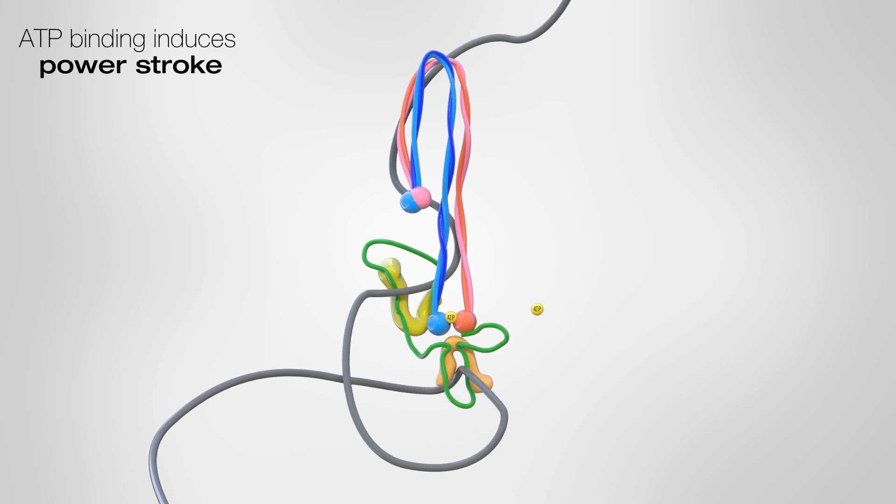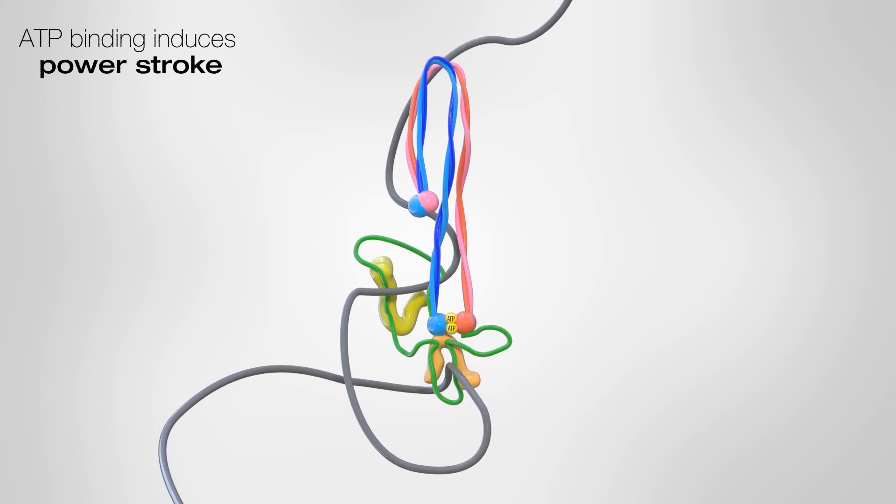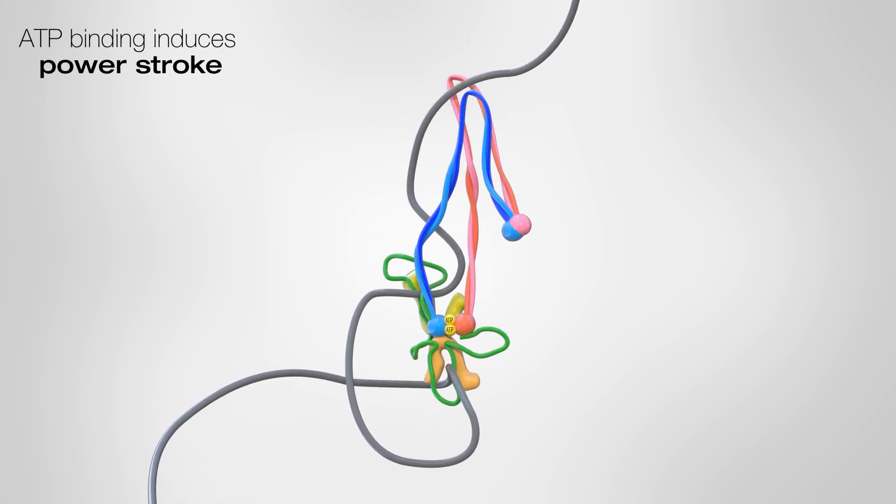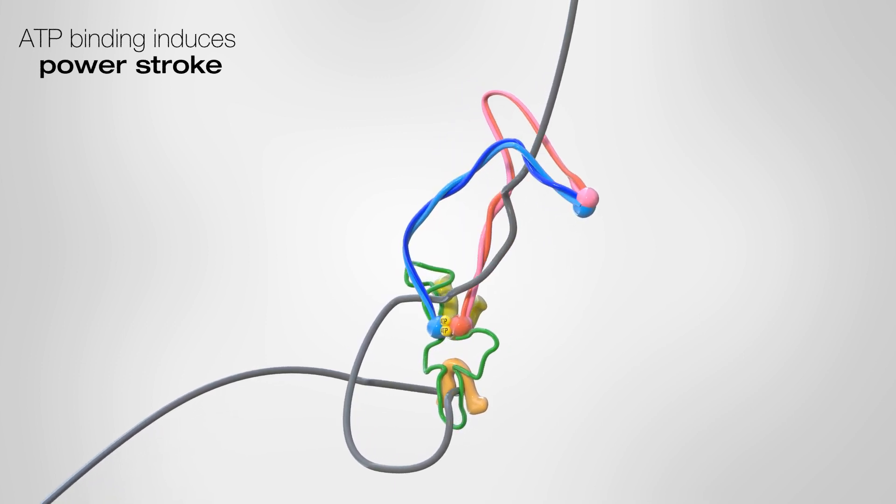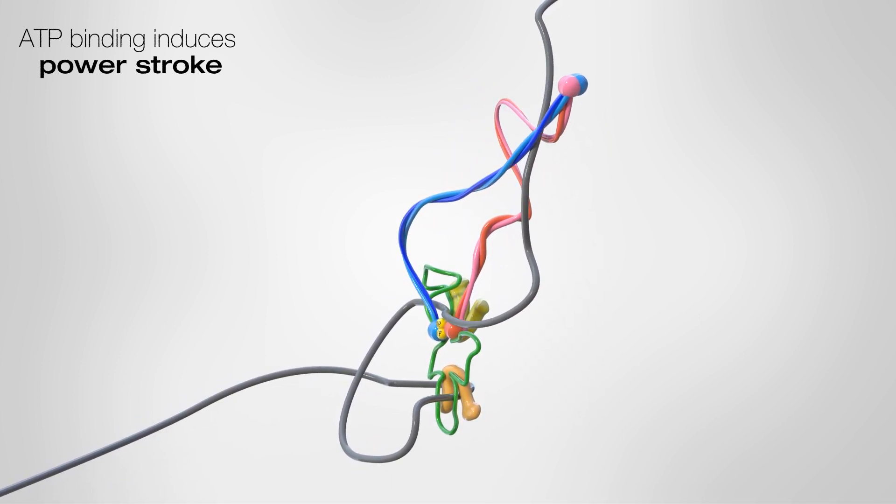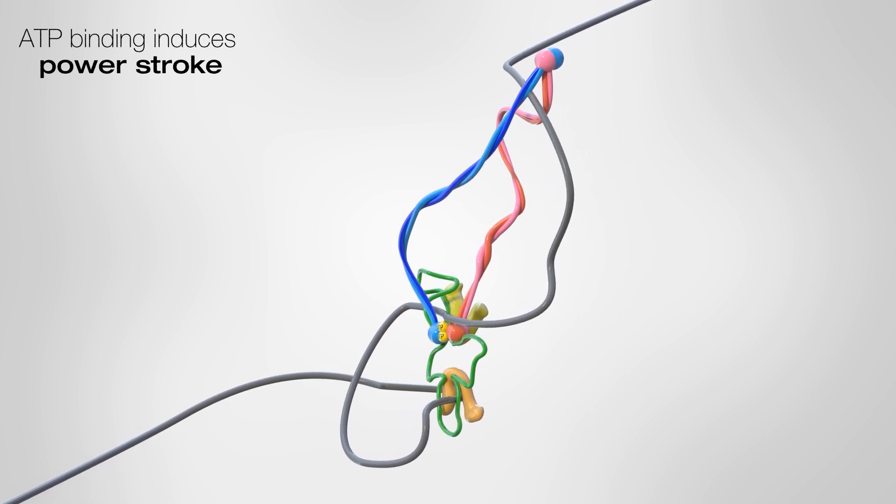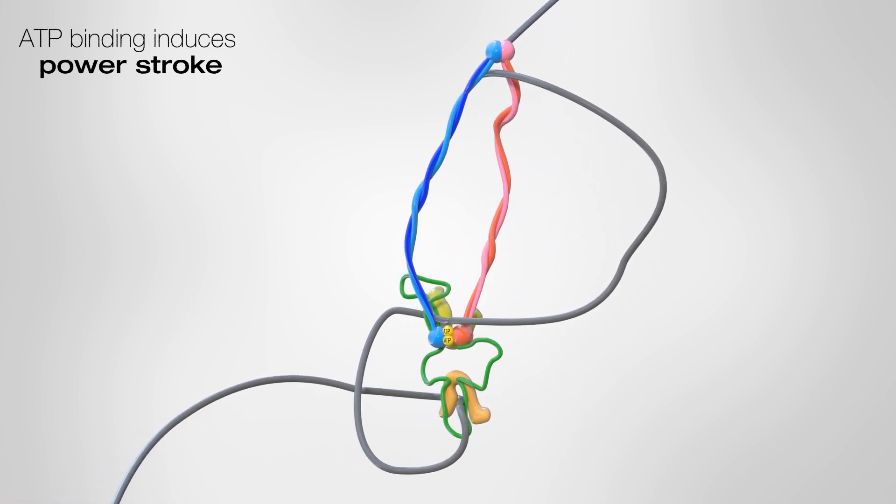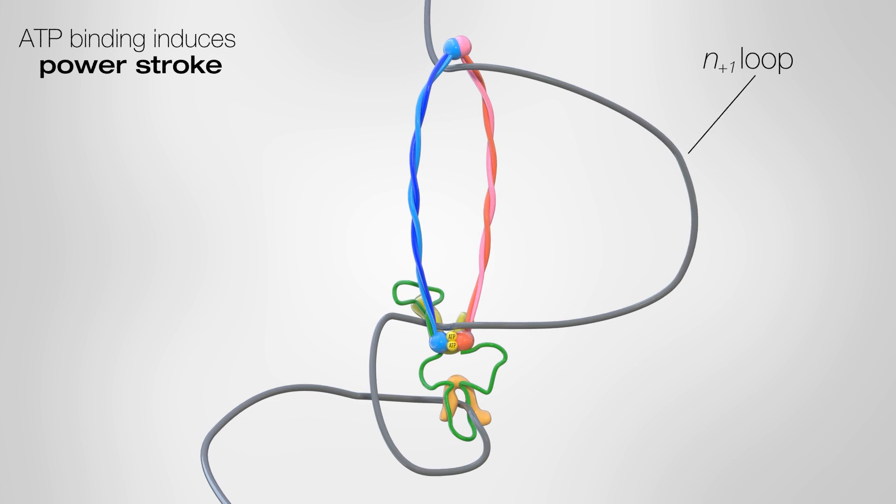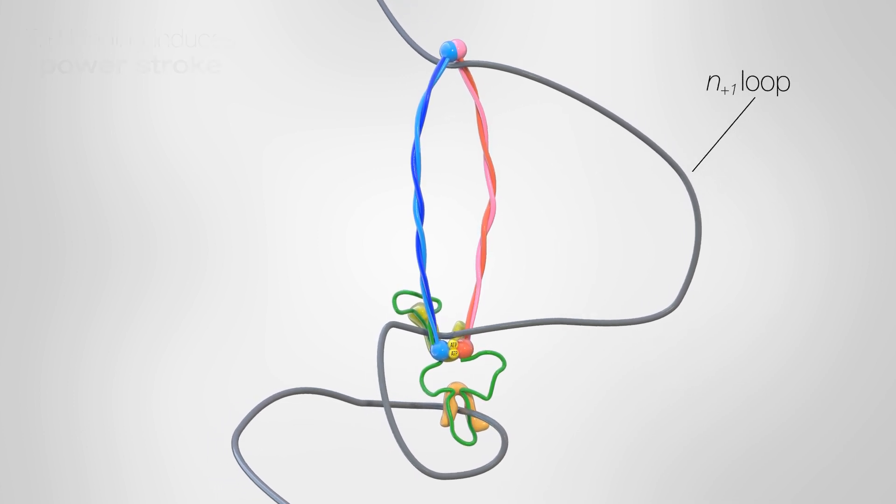Once ATP binds, our cryoEM structure shows that close to the motor chamber, the catalytic domains dimerize and open up the previously sealed long extensions of the machine to expose a new DNA binding surface. The motor chamber now not only holds, but actually feeds DNA between the long extensions of the complex, establishing a new loop segment in their lumen, which we again experimentally confirmed.